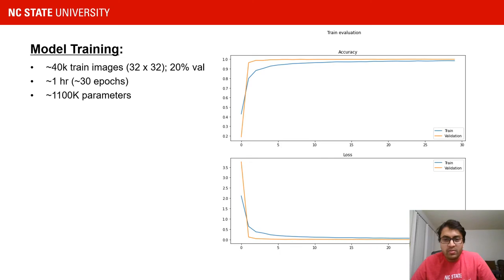Here is one of the sample training accuracy and loss curves from our training. We had about 40,000 training images which took about one hour with 30 epochs. The total number of parameters were approximately 1,100,000.